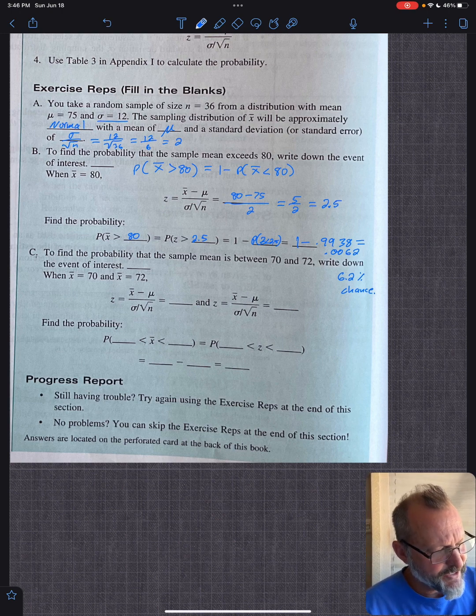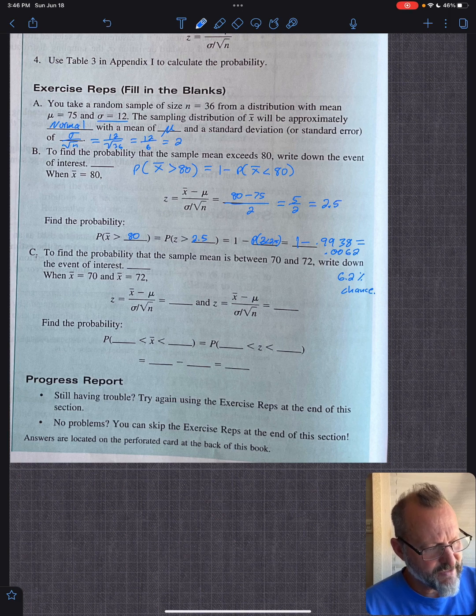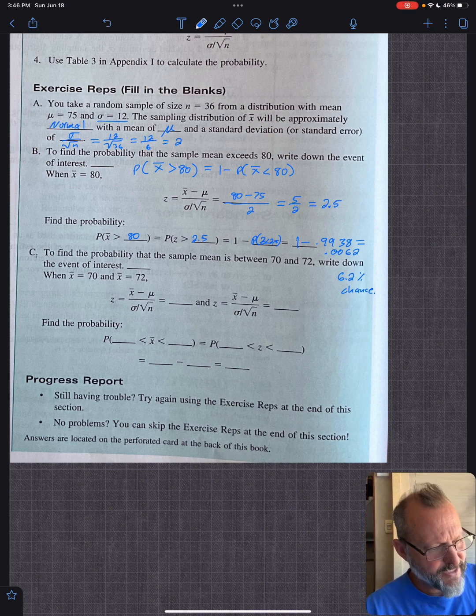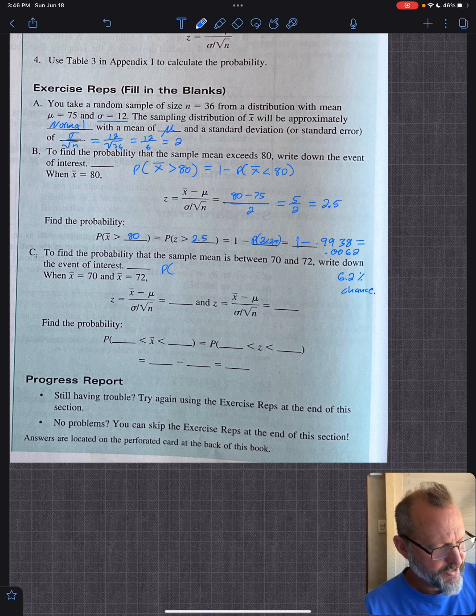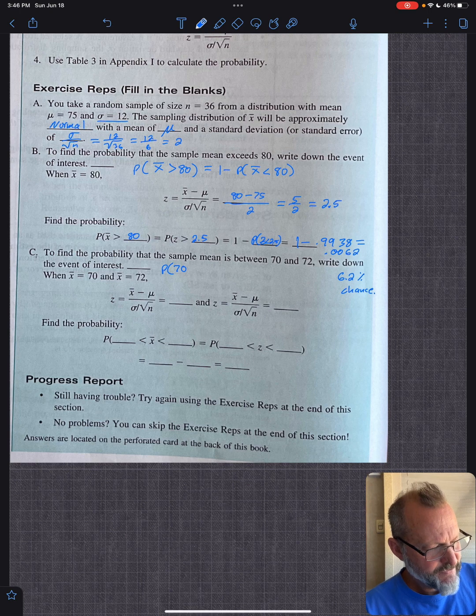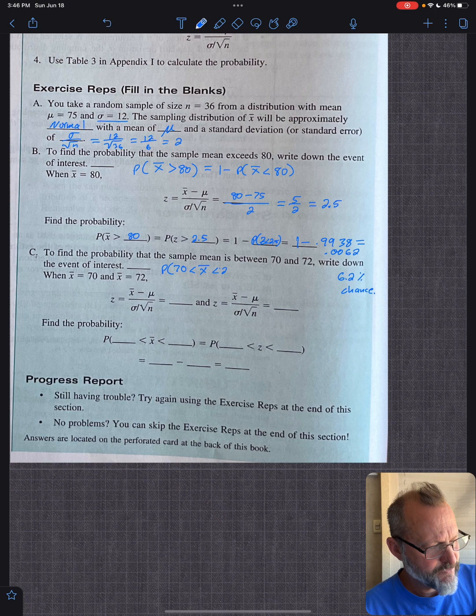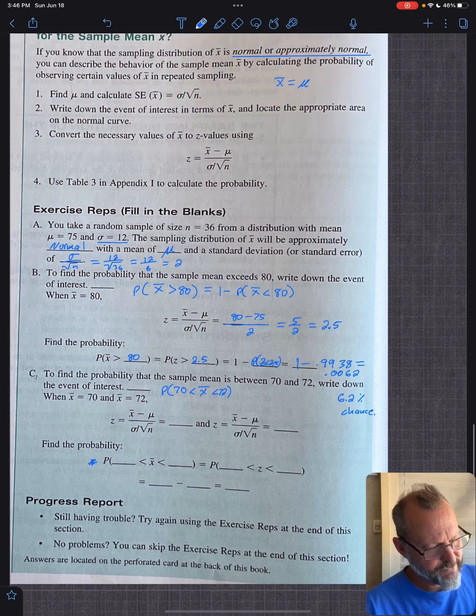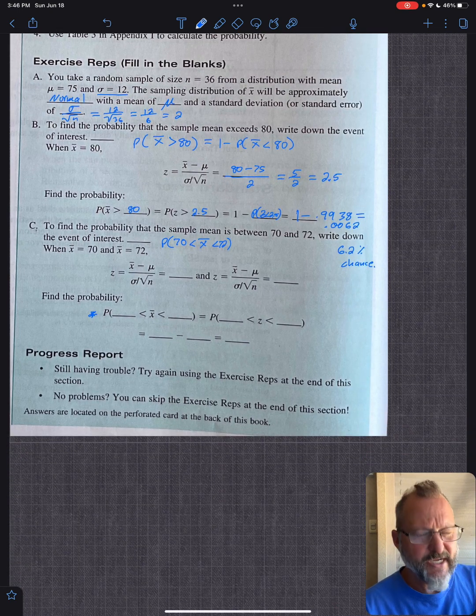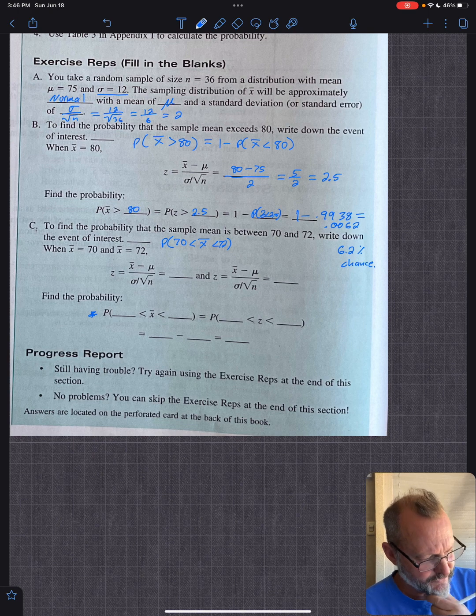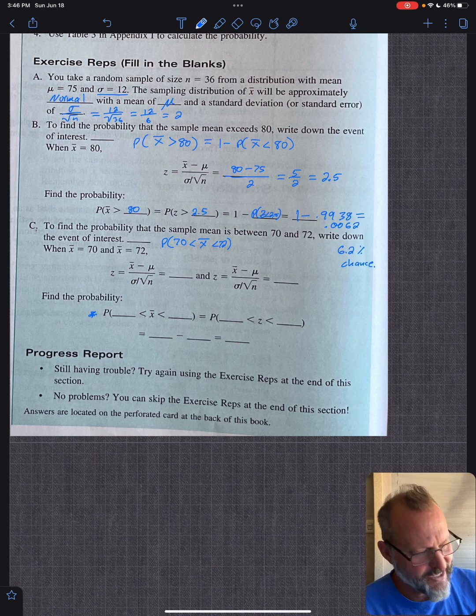To find the probability that the sample mean is between 70 and 72. Write the event of interest. So that's pretty much below. I think they just mean what they wrote below, but basically, it's a probability that you're between those numbers. So that the sample mean is between 70 and 72, which is really this. So we need to do each of those calculations to find the z-score. Go ahead and try those. Although I don't have them written down, so we'll just do them together, I guess.